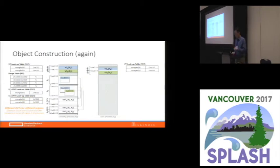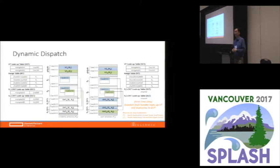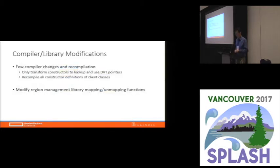When the second process starts, we create the shared region, and in the mapping process we use information to go to its own virtual table and copy the correct virtual table contents into the second process, so that it can dispatch to the correct virtual function. This makes object creation more expensive and makes the virtual region mapping a little more expensive. We made these changes to the LLVM compiler — specifically the Clang part — and modified the region management library mapping and remapping functions.